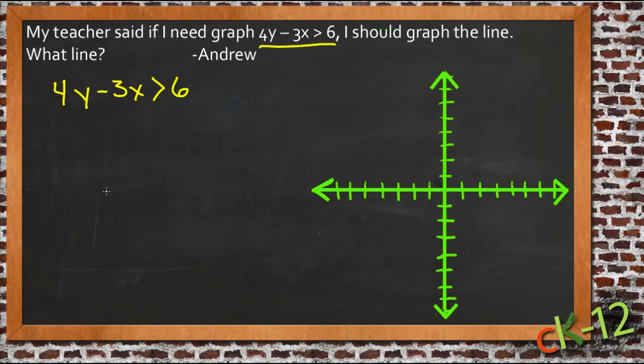But if we can find this point, that line where they equal 6 is sort of the boundary. Anything below that is going to be too small. Anything above that will be okay. So let's actually graph the line 4y minus 3x equals 6 and find out where that boundary line is.